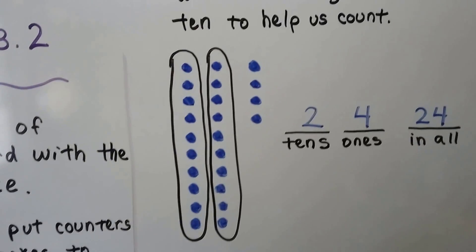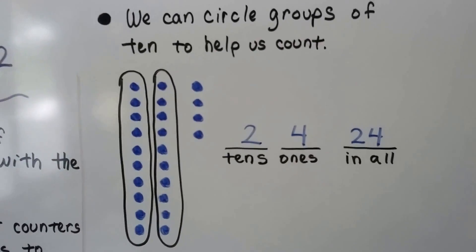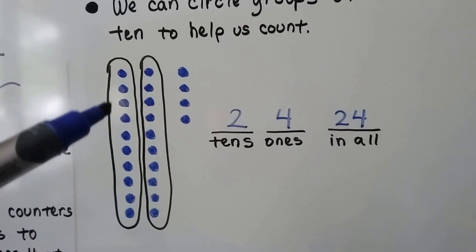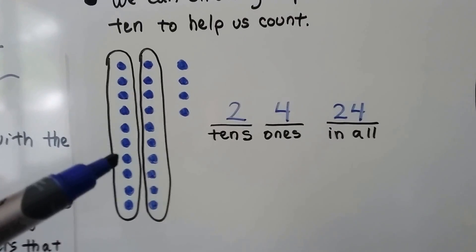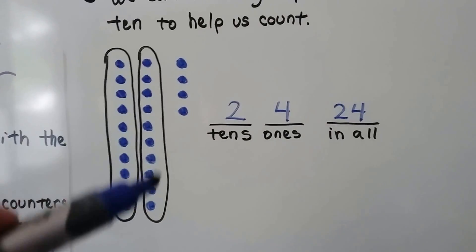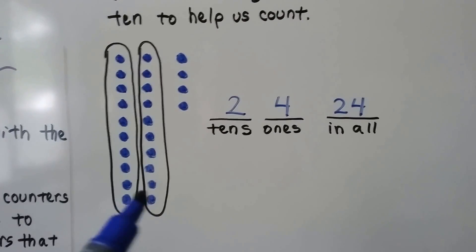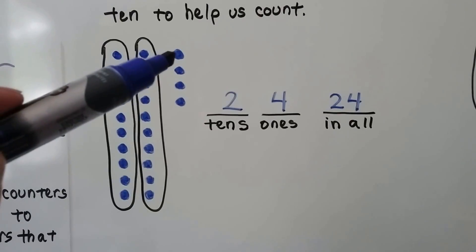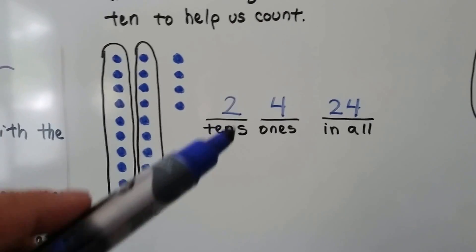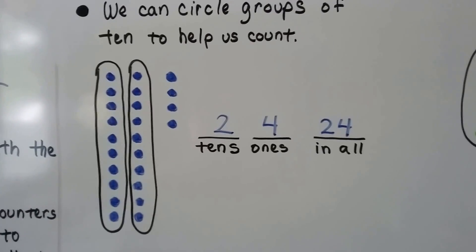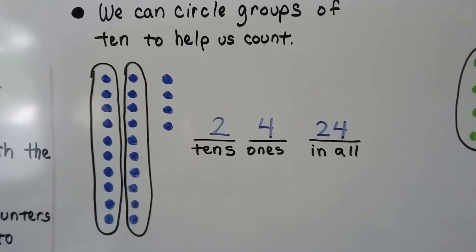We can circle groups of ten to help us count. We circle that ten, and we circle that ten. Now we know we have two tens, so we write two. We count our ones: one, two, three, four. We have four ones, so we have 24 in all. Two tens and four ones.